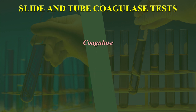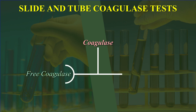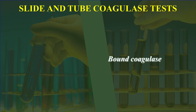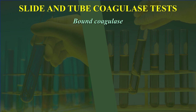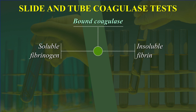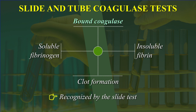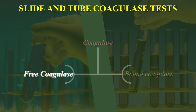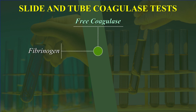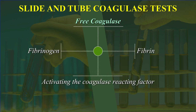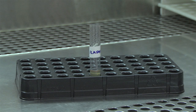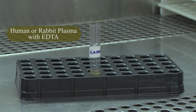Coagulase is an enzyme which occurs in two forms: free and bound. Bound coagulase causes clot formation of the plasma by converting soluble fibrinogen to insoluble fibrin. This bound coagulase can rapidly be recognised by the slide test. Free coagulase converts fibrinogen to fibrin by activating the coagulase reacting factor and can be detected by tube test.